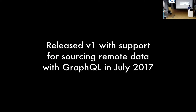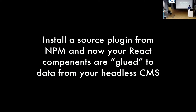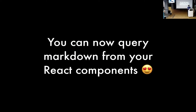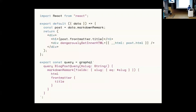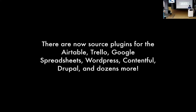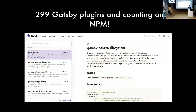I started working on that in late 2016, and then in July 2017 released V1 of Gatsby with support for this. Now all you have to do to use, say, Contentful as a data source for Gatsby is install the plugin from NPM, start writing GraphQL queries, put your data into React, and you can get going in minutes. If you haven't seen what a Gatsby page looks like, you have a normal React component up top, and down here you write a query, and the data is then accessible magically in the component. There are now 302 source plugins for all sorts of content.